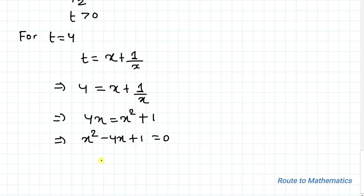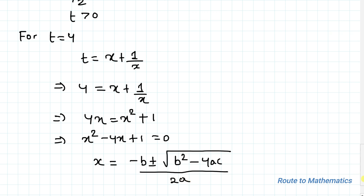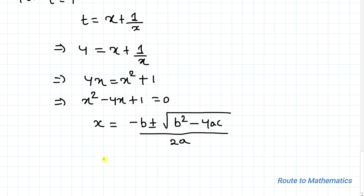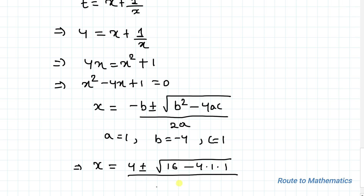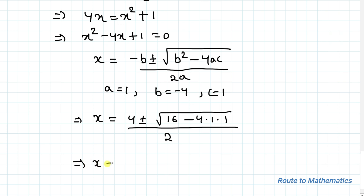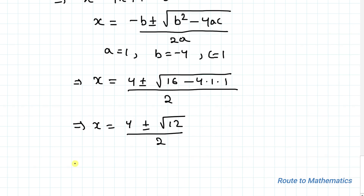We will apply the quadratic formula to find the value of x: x equals minus b plus or minus root under b squared minus 4ac, divided by 2a, where a, b, c are the coefficients of the quadratic equation. Here a equals 1, b equals minus 4, and c equals 1. Putting in the values: x equals 4 plus or minus root under 16 minus 4, divided by 2, which is x equals 4 plus or minus root 12, divided by 2, which equals 4 plus or minus 2 root 3, divided by 2, giving x equals 2 plus or minus root 3.